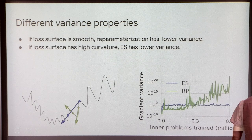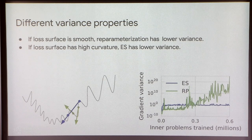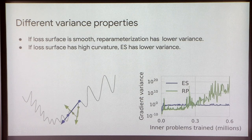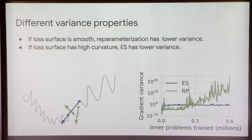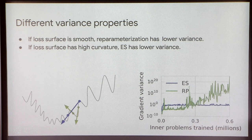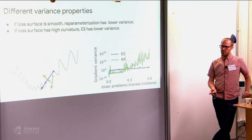For training a learned optimizer, we can plot the gradient variance of each of these gradient estimators over the course of training. There are theoretical results which could quantify these properties — it's pretty straightforward — but we measured this empirically.